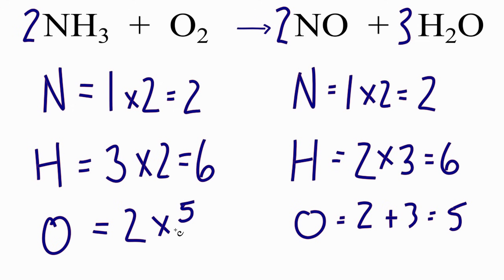And two times five over two, two times five is ten divided by two, that gives us five. So we can just write five over two. And this equation is balanced.